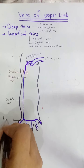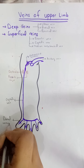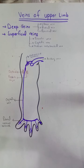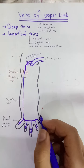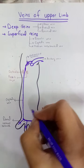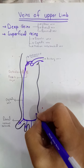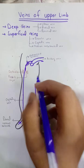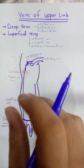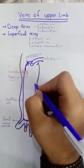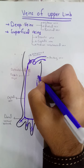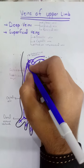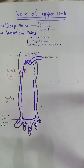Now we will see the second vein, which is the basilic vein on the medial side. It will ascend on the medial side, and when it reaches the inferior third of the forearm it will become deep — moving inside the fascia, shown in a dotted line — and then it will enter the axillary vein.